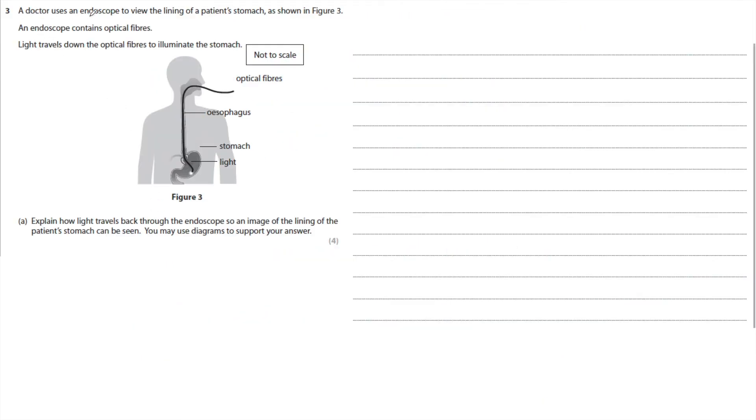A doctor uses an endoscope to view the lining of the patient's stomach, as shown in figure 3. An endoscope contains optical fibers. Light travels down the optical fibers to illuminate the stomach. Explain how light travels back through the endoscope so an image of the lining of the patient's stomach can be seen. You may use diagrams to support your answer. So this is worth four marks.